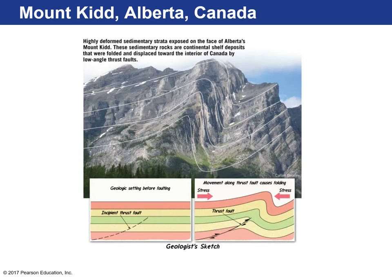Here's an example of Mount Kidd — some former sedimentary rocks that were laid down flatly at an ocean margin of the continent. They underwent compression, a thrust fault formed, and started to fold these once horizontal sedimentary rocks. Here's an example of a low-angle thrust fault.